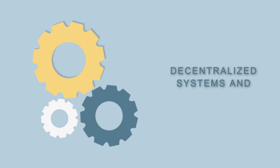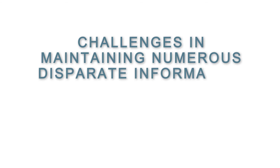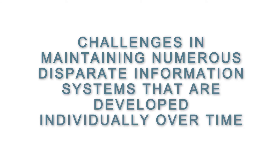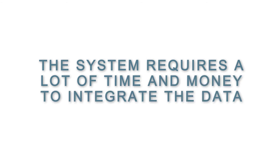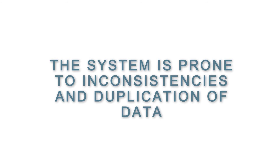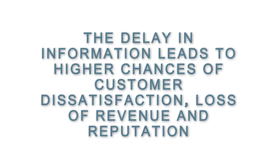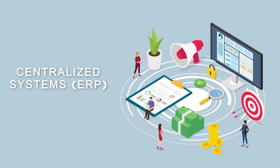This scenario describes some of the many obstacles faced by a decentralized system. The major problems include: challenges in maintaining numerous disparate information systems developed individually over time; the system requires a lot of time and money to integrate data; it is prone to inconsistencies and duplication of data; delays in information lead to higher chances of customer dissatisfaction, loss of revenue and reputation, and high costs of inventory, materials, and human resources.